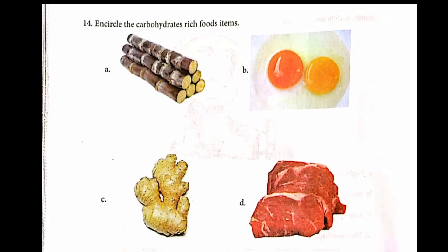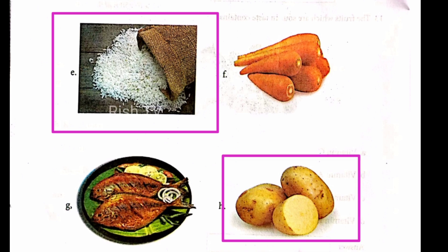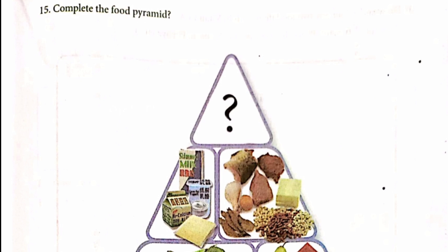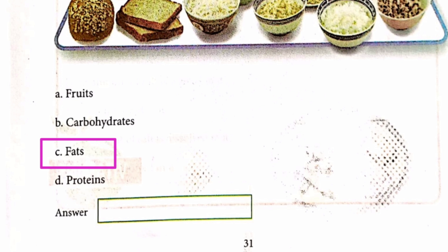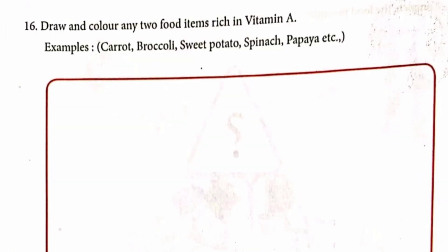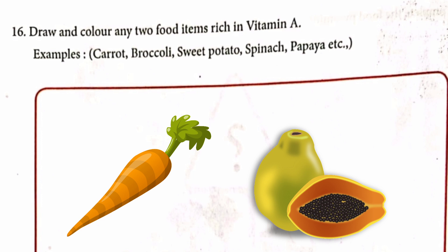Question 11. The carbohydrates-rich food items include rice, wheat, and grains.